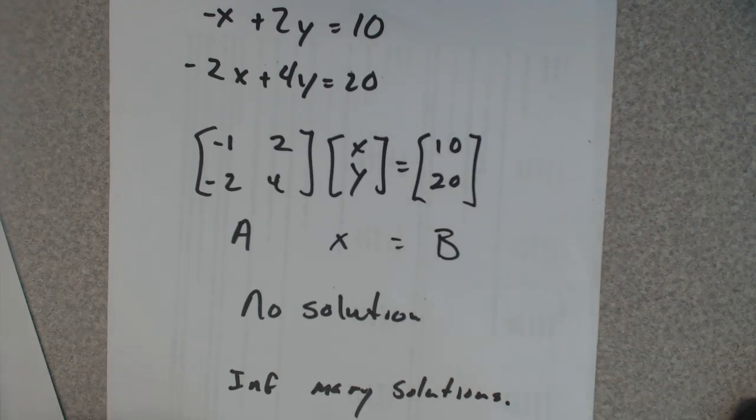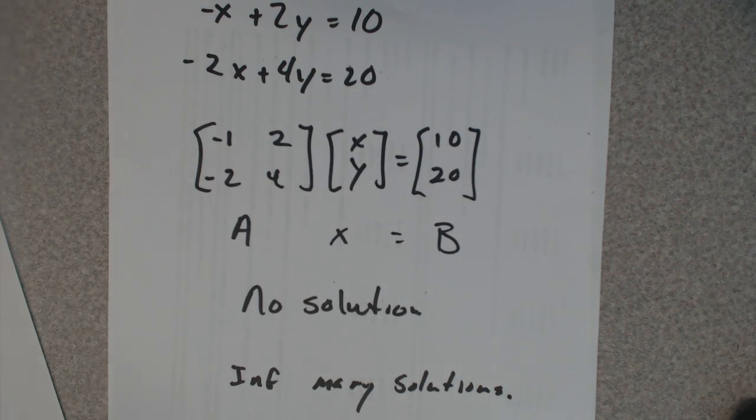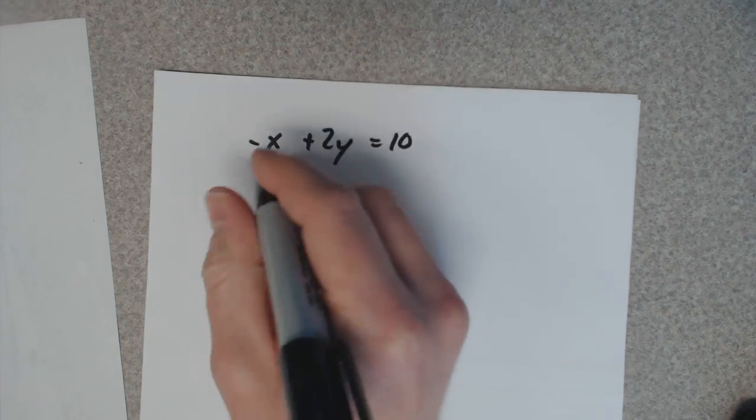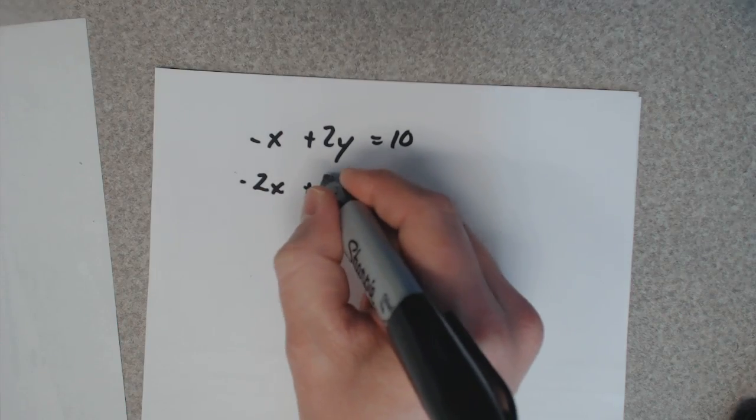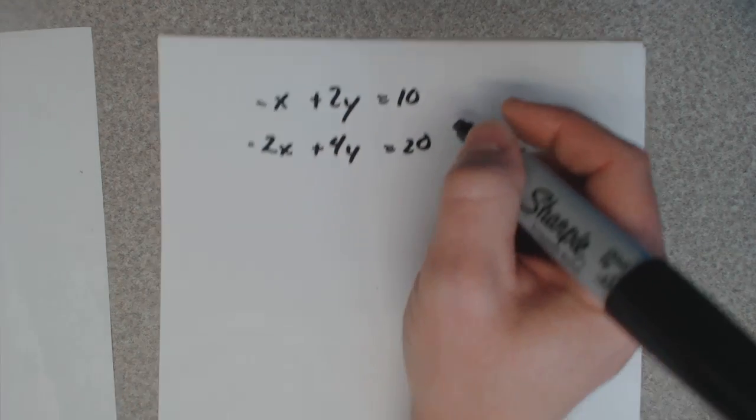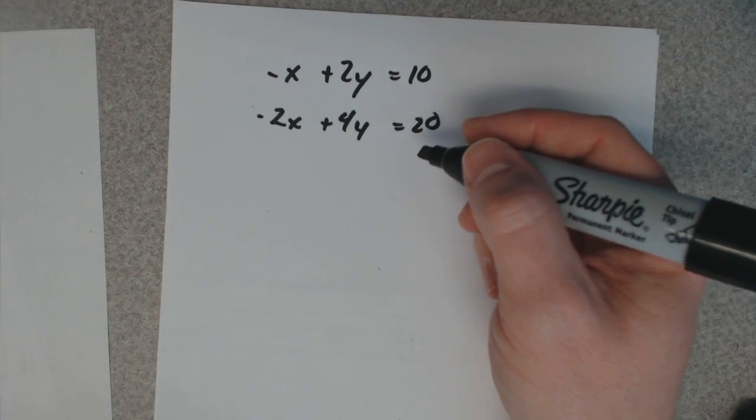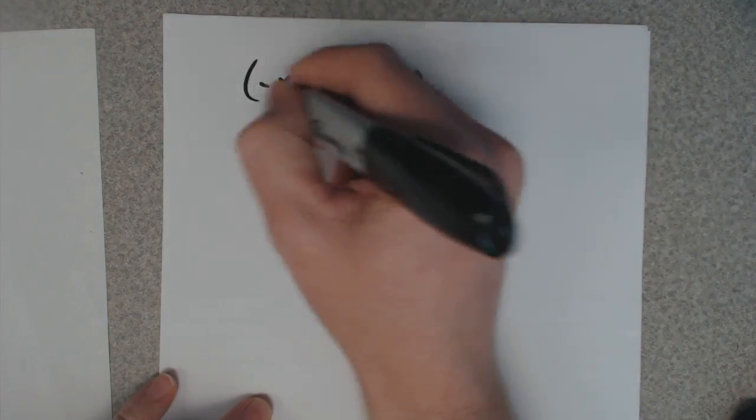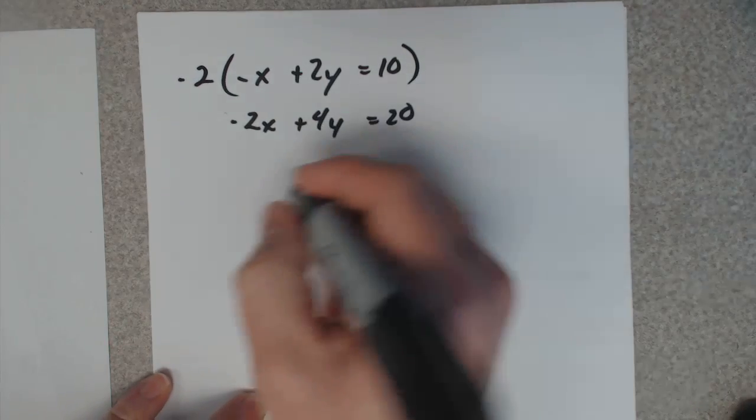So to figure out which one's which, you need to simplify. You've got to pick another method, and elimination method would work here. So if I multiply the top by negative 2, I get two new equations.